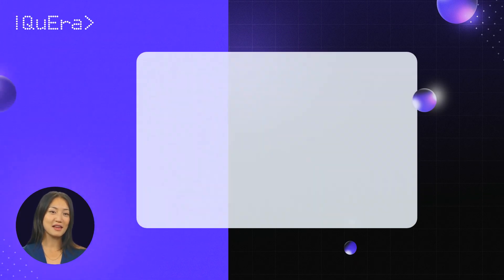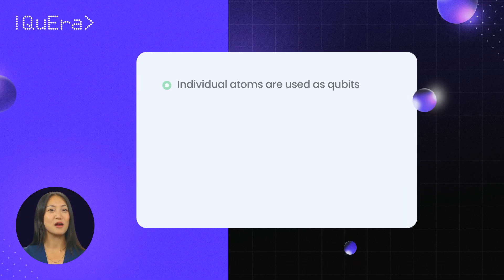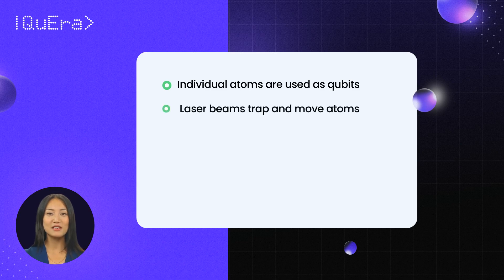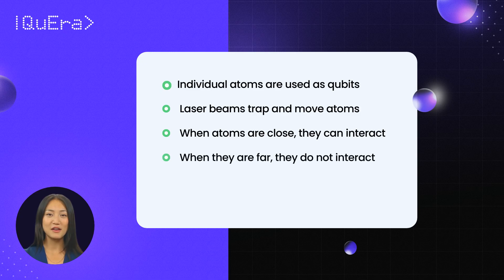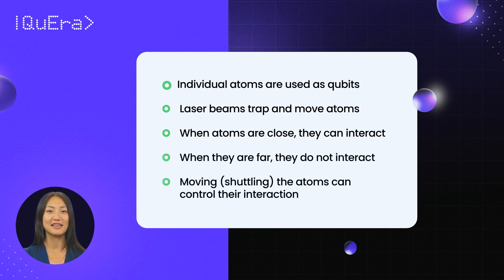In neutral atom computing, individual atoms are used as qubits. Focused laser beams trap qubits in place. The atoms can be shuttled to other locations by steering the lasers. When atoms are close, they can interact, and when they are far from each other, they do not. Thus, moving the atoms can control their interaction.